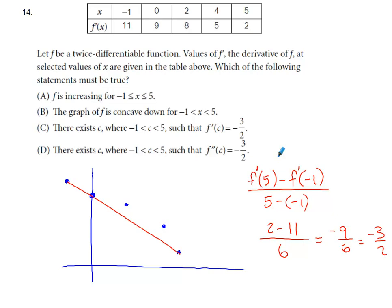I'm allowed to apply the intermediate value theorem if I'm continuous. Because I'm twice differentiable, I know that f prime is continuous, right? My first derivative is always going to exist. So I know that my f prime values...